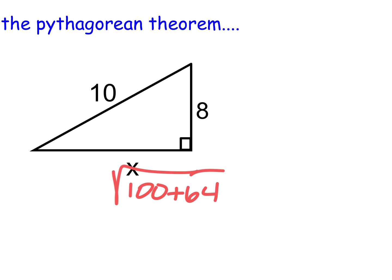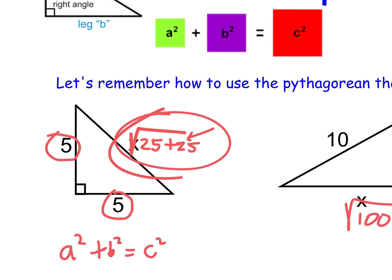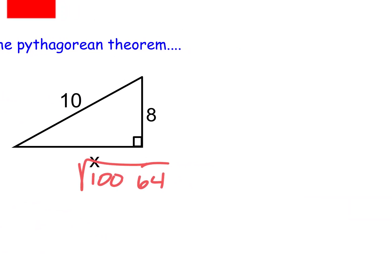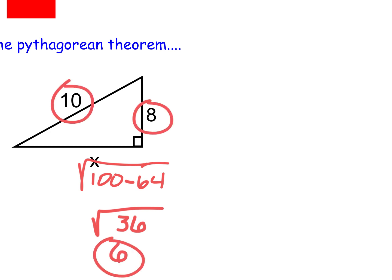We're not finding the hypotenuse this time. When you're doing the longest side — the hypotenuse — you add. When you're not doing the longest side, you subtract. Square root of 100 minus 64 is square root of 36. You kind of recognize square root of 36? That's 6. So this is the 6, 8, 10 triangle — close cousin of the 3, 4, 5. All the numbers are just double.